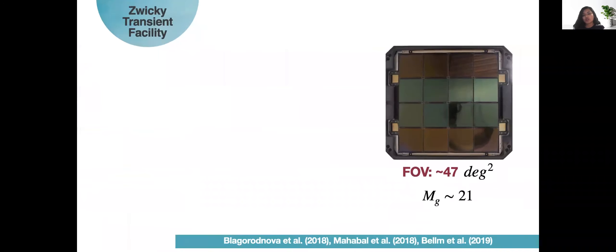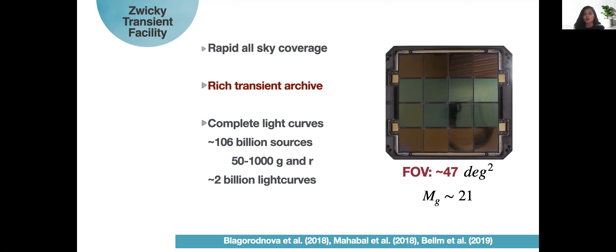The Zwicky Transient Facility, as you've heard previously in this school, has a staggering field of view of about 47 degrees squared and by combining private and public data sets we can go down to optical magnitudes as low as 21. If you combine the rapid all-sky coverage with a cadence as low as three to one days depending on if you're looking at the galactic plane, ZTF with its field of view and this cadence together can provide a really rich transient archive.